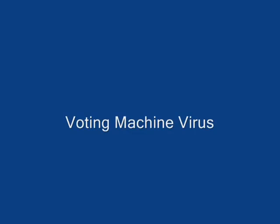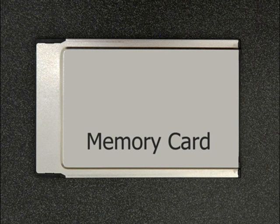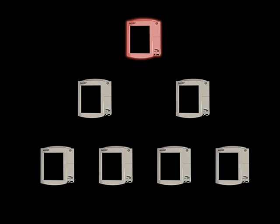Due to design flaws in the Diebold AccuVote TS voting machine, it is possible to construct a computer virus that infects these machines and spreads automatically from one machine to many others. To illustrate this, we have constructed a demonstration virus in our lab. The machines use removable memory cards to distribute software updates and store the results of elections. The memory cards function similarly to floppy disks or thumb drives on ordinary PCs. Memory cards act as carriers for the virus. When a memory card is inserted into an infected machine, the machine copies the virus onto that memory card. If the memory card is removed and later put into another machine, the virus spreads from the memory card to the new machine.